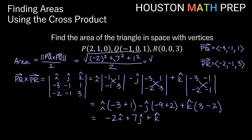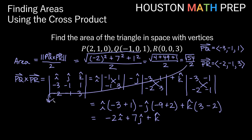The magnitude is the square root of (-2)² + 7² + 1² = the square root of 4 + 49 + 1 = the square root of 54, all over 2. We can simplify the square root of 54: since 9 × 6 = 54, we get 3√6 over 2. So the area of the triangle in space with those vertices is 3√6 over 2. Thanks for watching — hopefully this helps you with areas using the cross product. We'll see you in the next video.